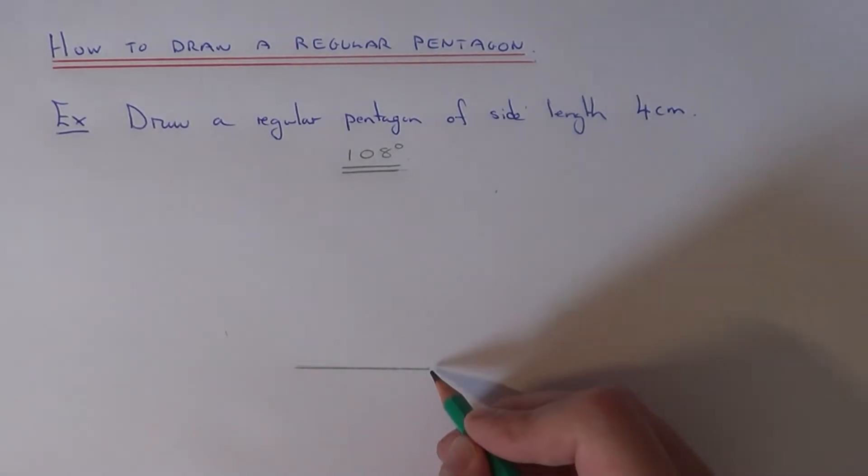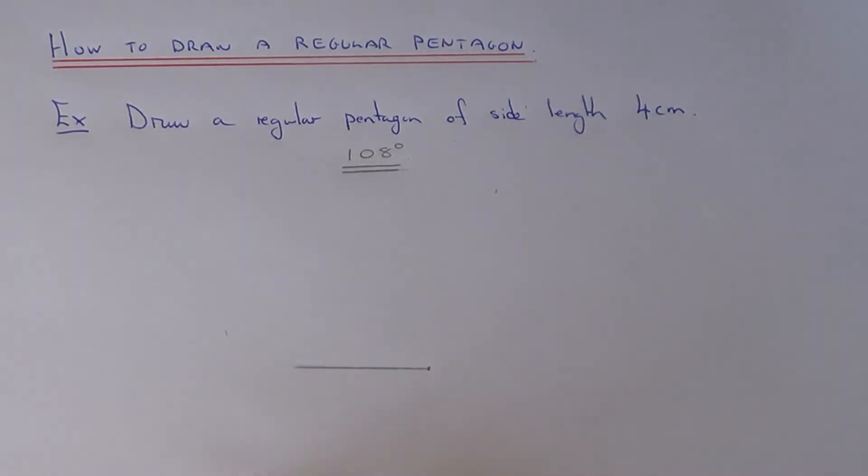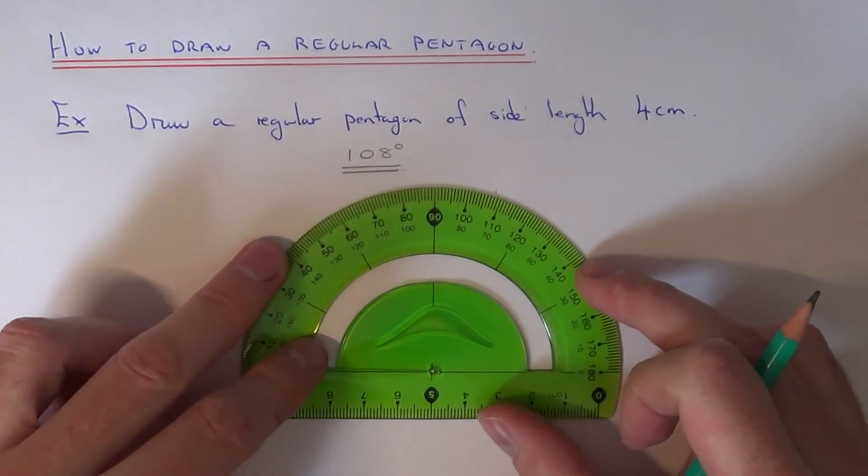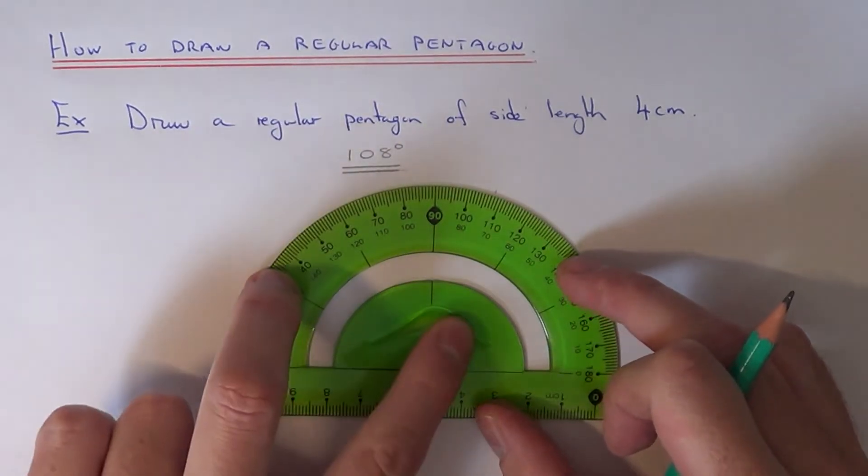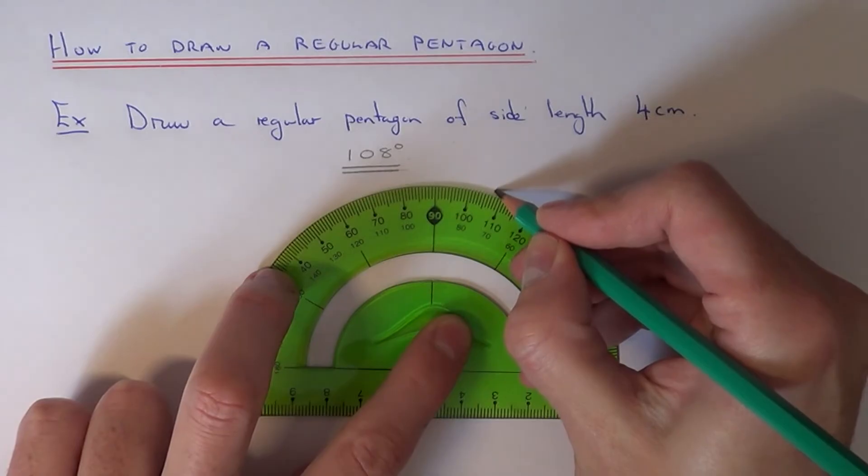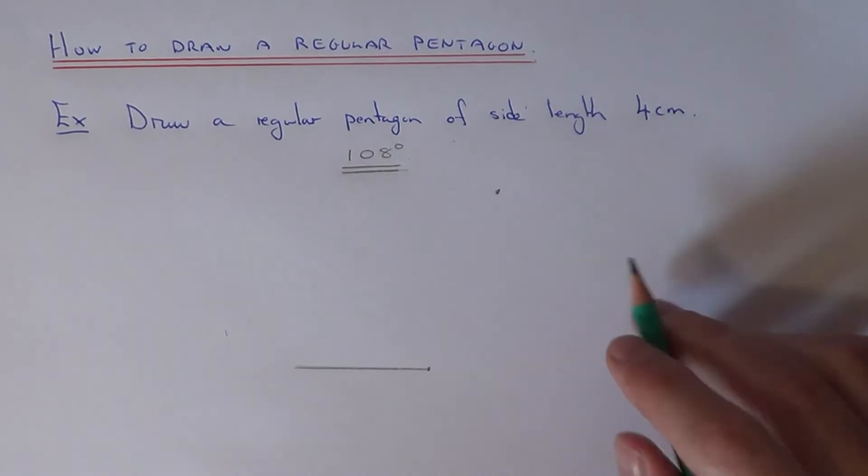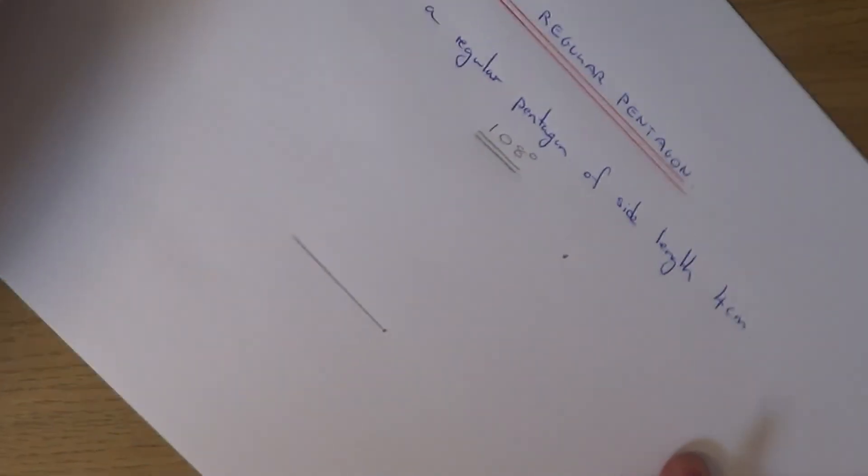So you can now measure the first angle from the right hand side of the line. And the inside angle remember is 180 degrees. So 108 is here. So we now need to make this line four centimetres long.